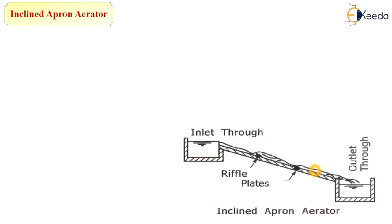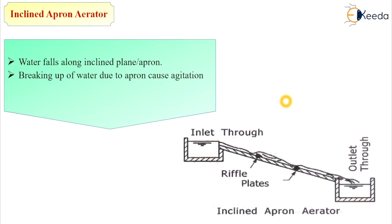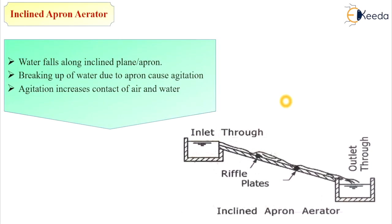The next type is the inclined apron aerator, which comes under gravity flow. In this type, water falls along an inclined plane or apron. There is an inlet trough and an outlet trough, and an inclined platform is provided between them through which water is passed. The breaking up of water due to the apron causes agitation, which increases contact between air and water, facilitating the transfer of gases.